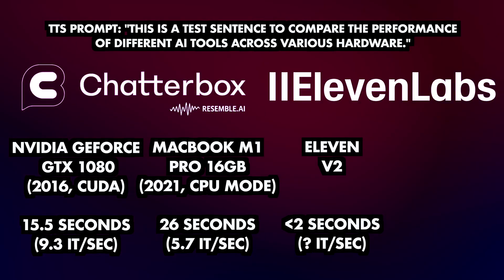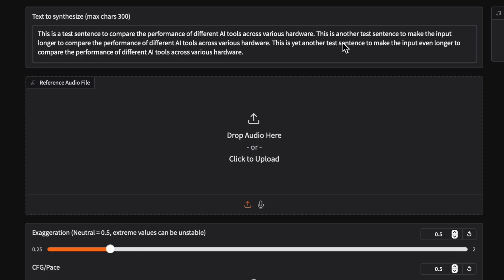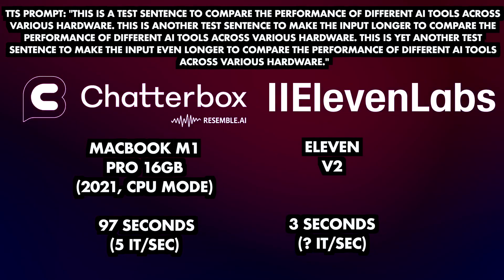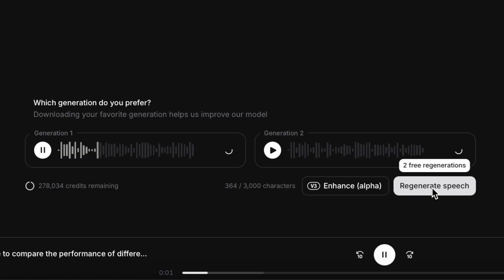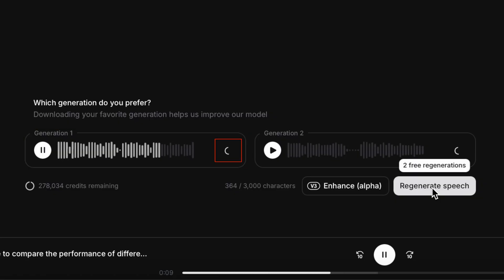ElevenLabs takes less than 2 seconds to generate audio with the V2 model, and about 4 to 6 seconds with V3. Interestingly, when you use a prompt that is over three times as long, the local tools take roughly three times longer to generate the audio — which is expected. But ElevenLabs V2 takes just 1 second longer compared to the single sentence, and V3 takes about 7 seconds until the audio starts playing, but it isn't done generating — it's streaming the data to you, and you can tell by the changing waveform that it takes a few more seconds until the download button becomes available.